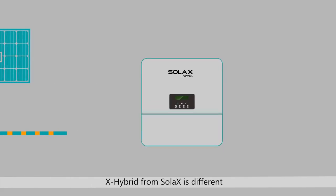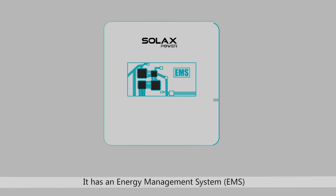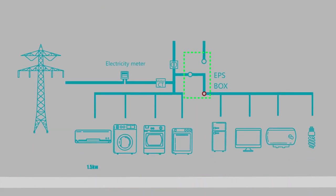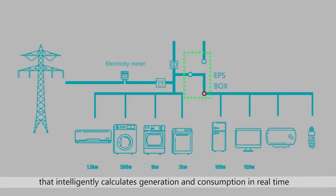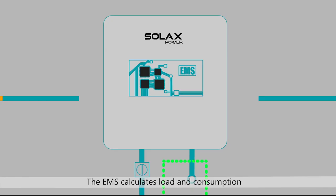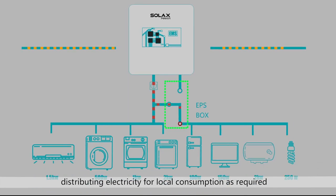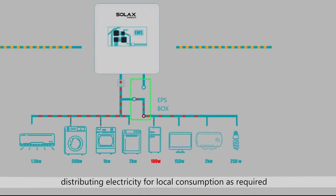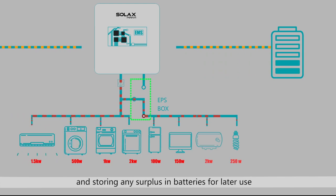X-Hybrid from SolarX is different. It has an Energy Management System that intelligently calculates generation and consumption in real time. The EMS calculates load and consumption, distributing electricity for local consumption as required and storing any surplus in batteries for later use.